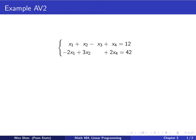Hello everyone, welcome to video 21 of chapter 3. In this video, we'll take another example of using artificial variables. We call this example AV2, AV for artificial variable.